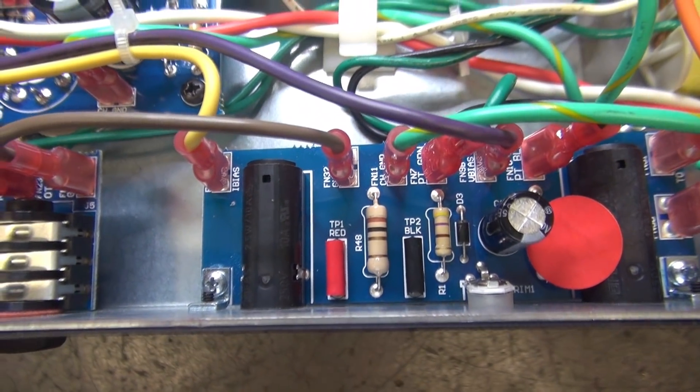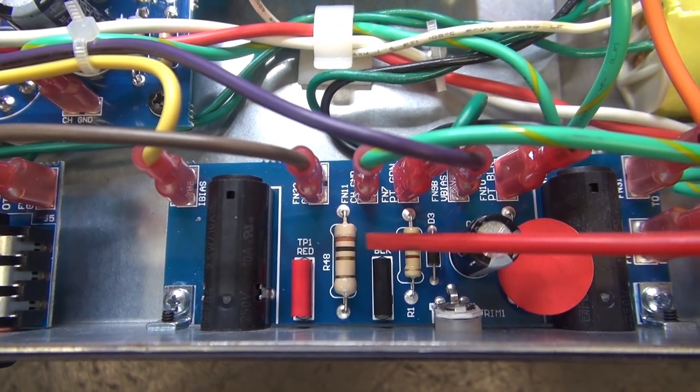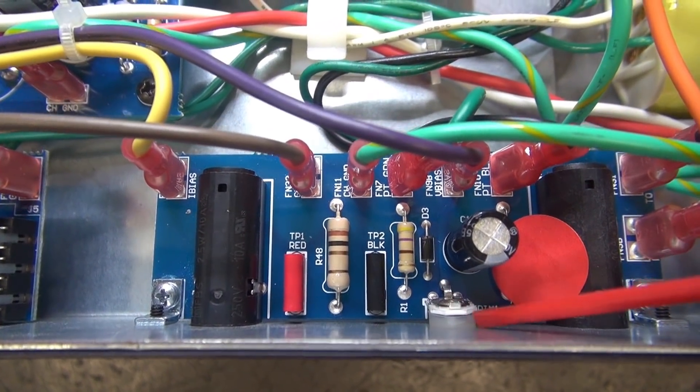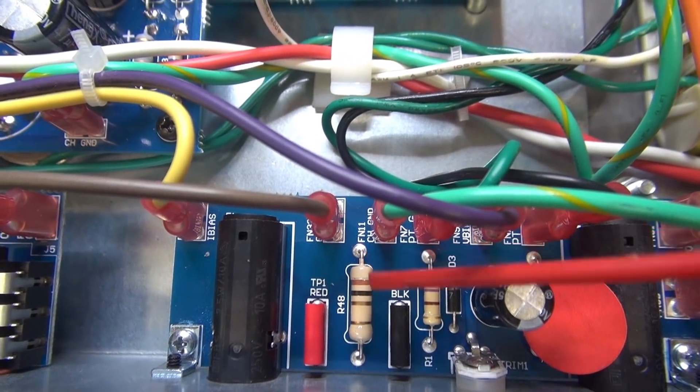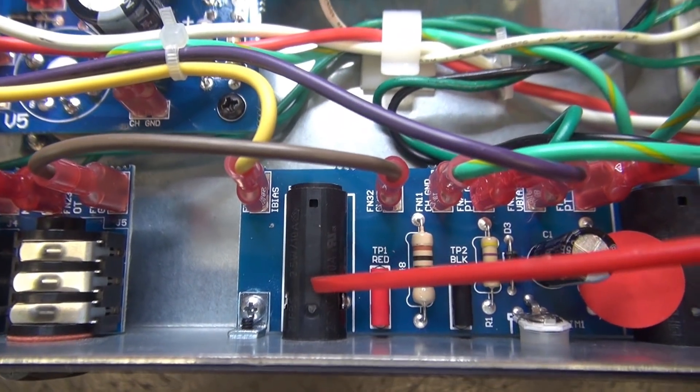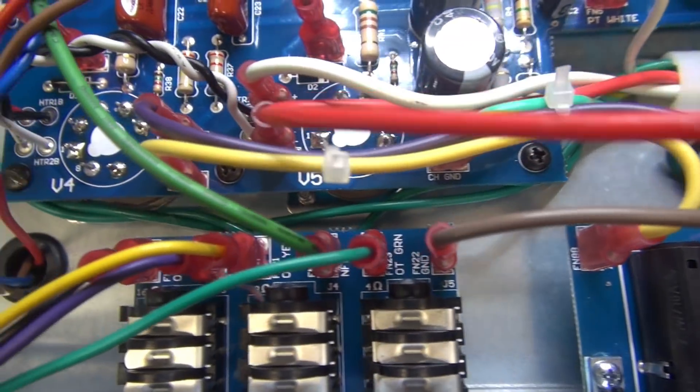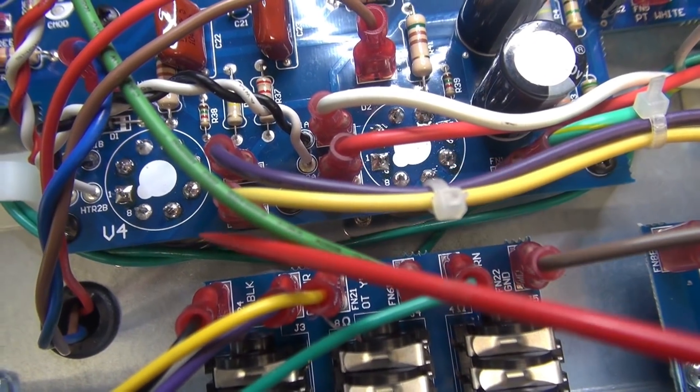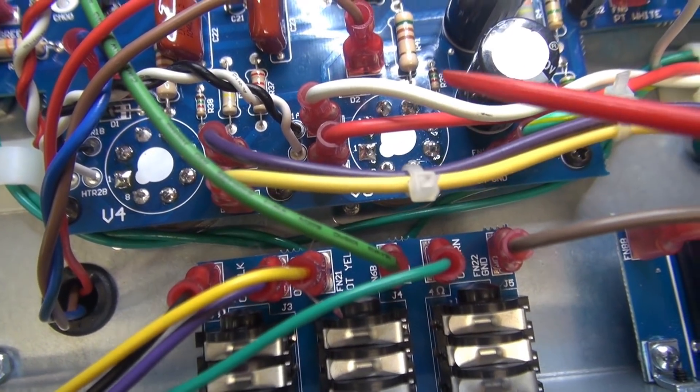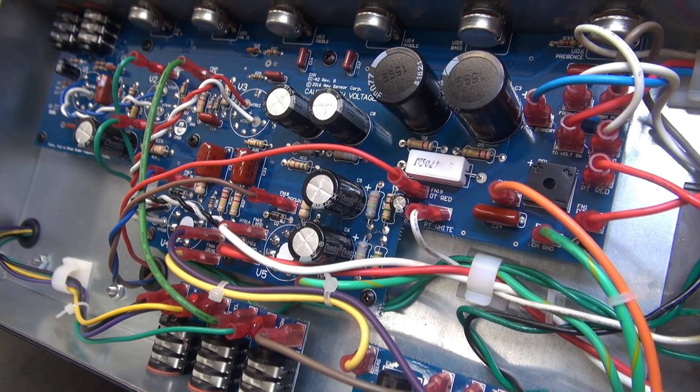Another feature I wanted to point out with this amp is this is the bias board. There's the pot, there's your test points. This one ohm resistor goes through this 800 milliamp fuse to the yellow lead. That goes over here and Y's off to both of the pin 8s of the 6L6s. And that is where they're measuring their bias.